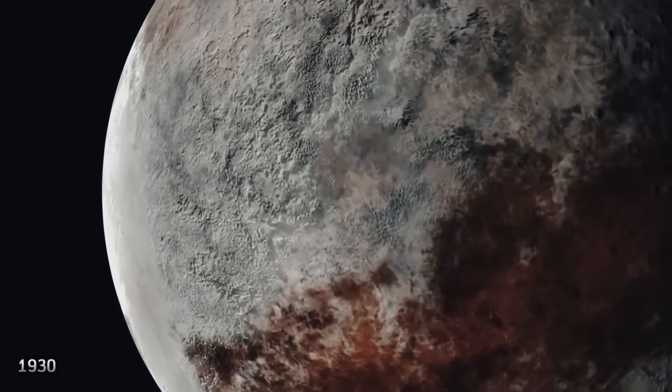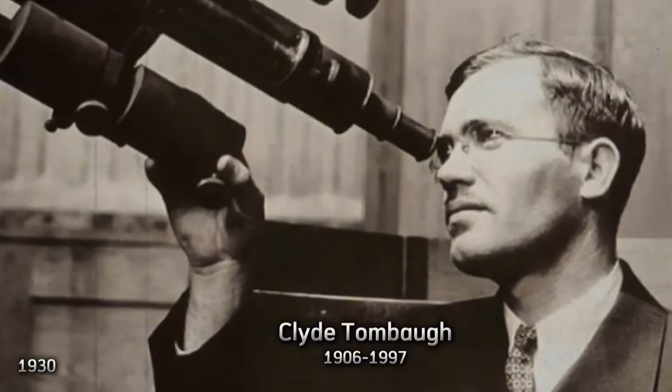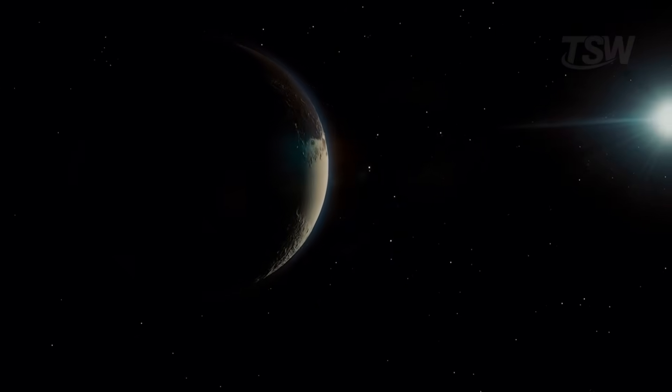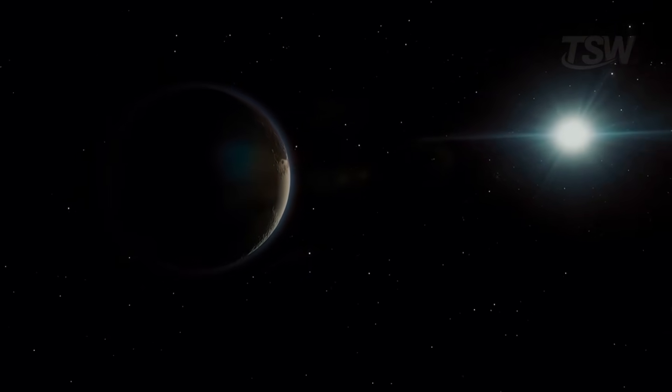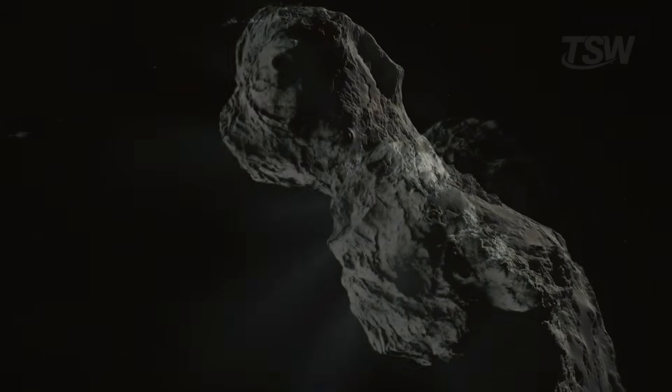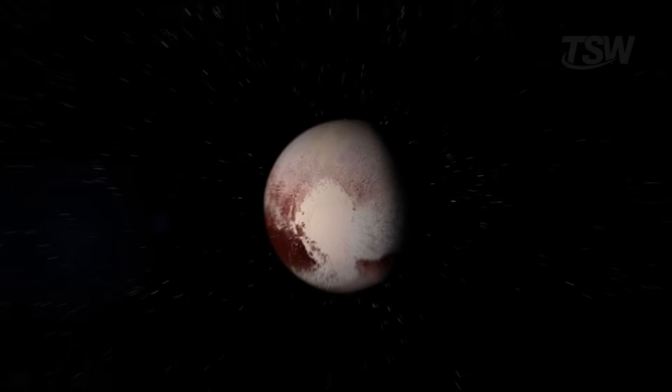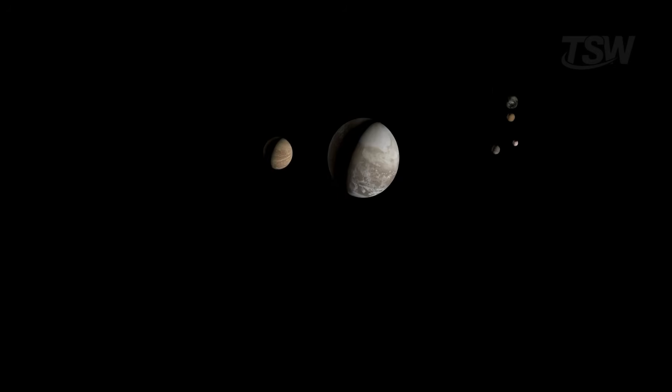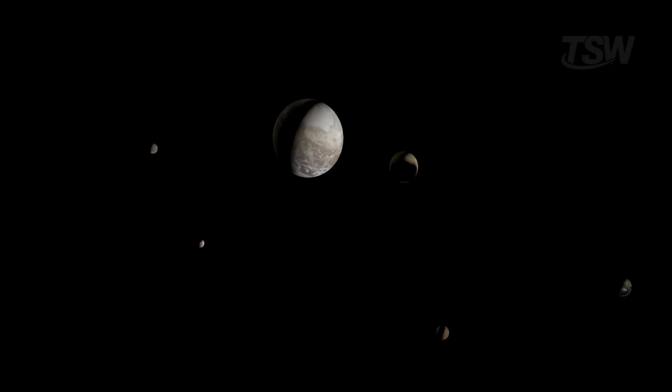Pluto was discovered in 1930 by Clyde Tombaugh and held the title of the most distant planet in the solar system for a long time. But in 2006, after the discovery of other similar objects, the International Astronomical Union decided to reclassify it as a dwarf planet. That's because Pluto doesn't meet all the criteria that define a planet, especially the fact that it shares its orbit with other similar bodies. And the more we explore this region beyond Neptune, the clearer it becomes that Pluto is just one among many.